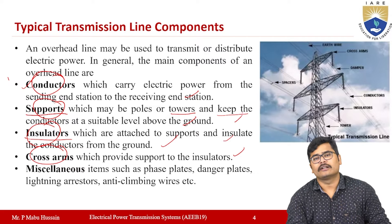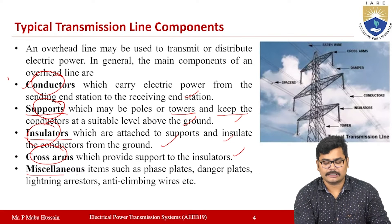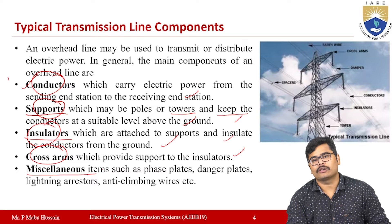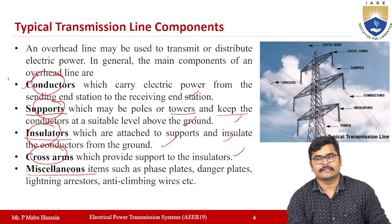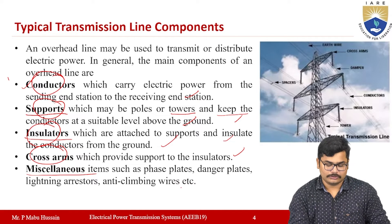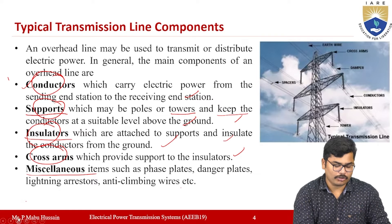Cross arms provide support to the insulators. Along with the main components, some miscellaneous items are also present, including danger plates, anti-climbing devices, dampers, and lightning arrestors. This covers the transmission line system and its components.